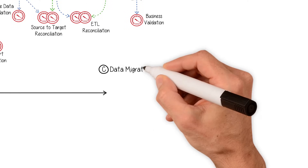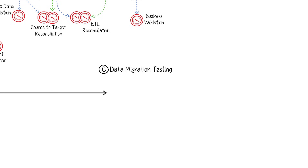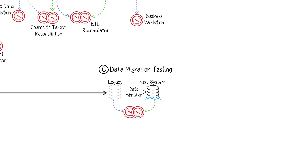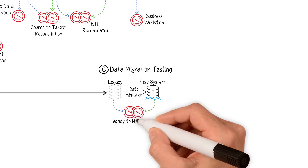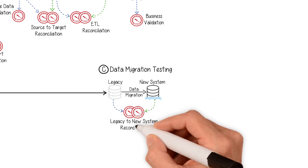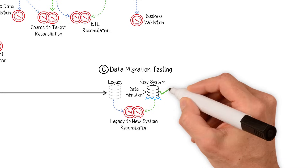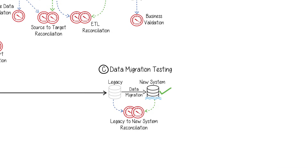Data migration testing. IceDQ is used for data migration testing. It reconciles and certifies the data migration between the legacy system and new systems such as a data lake. IceDQ ensures all the data is migrated accurately.